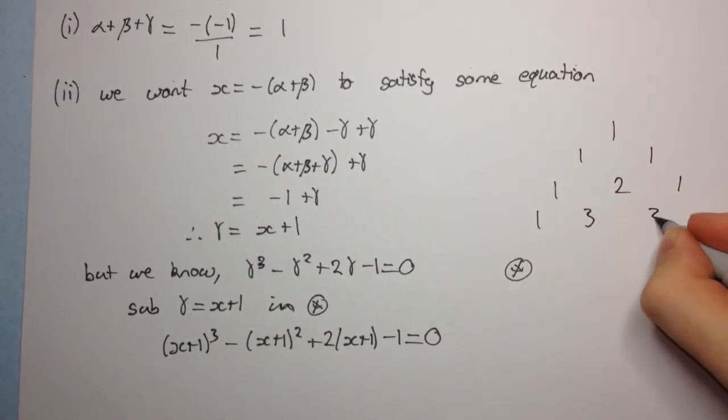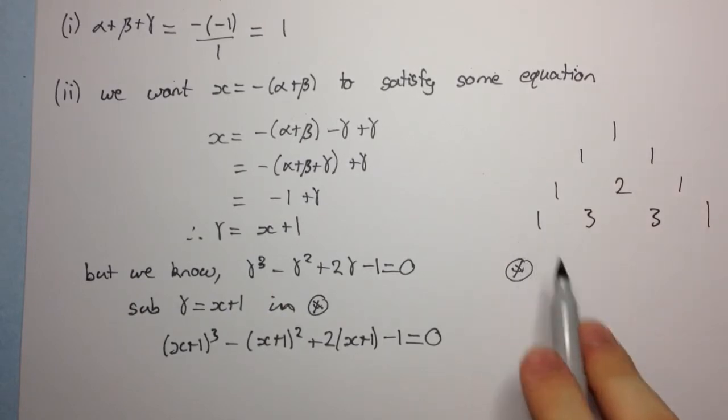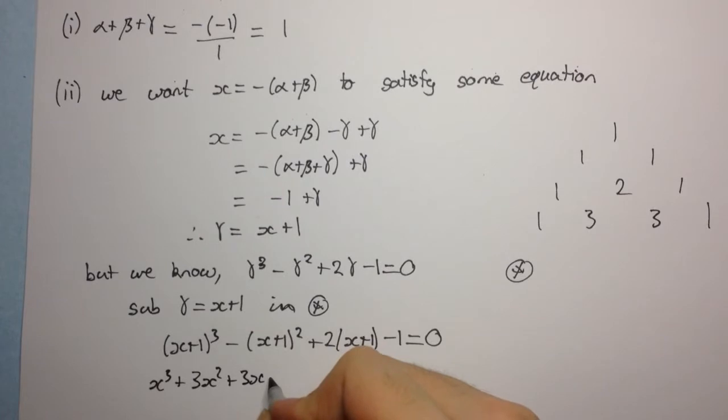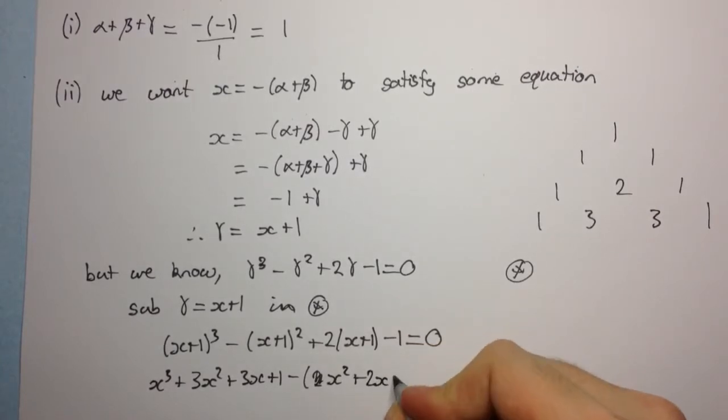Alright, so that's Pascal's triangle. And these are going to be the coefficients here. So, we have x cubed plus 3x squared plus 3x plus 1 minus... This will be x squared plus 2x plus 1 plus 2x plus 2 minus 1 equals 0.